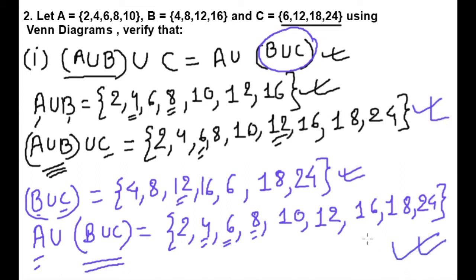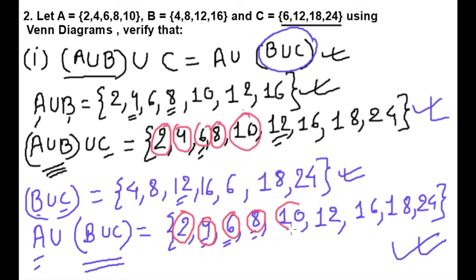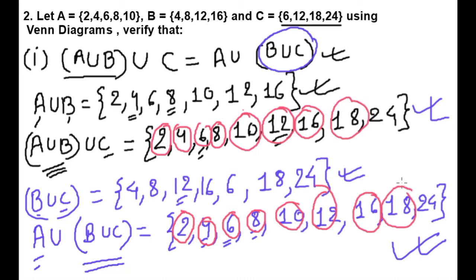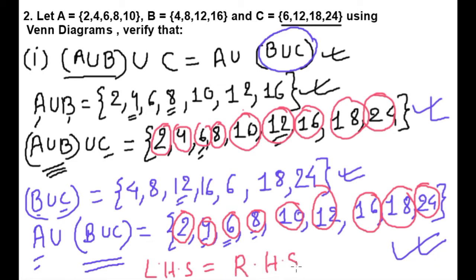We will now check that both left hand side and right hand side are the same. LHS: 2,4,6,8,10,12,16,18,24. RHS: 2,4,6,8,10,12,16,18,24. Both are equal, so this proves that LHS equals RHS. Now we have to make the Venn diagram.